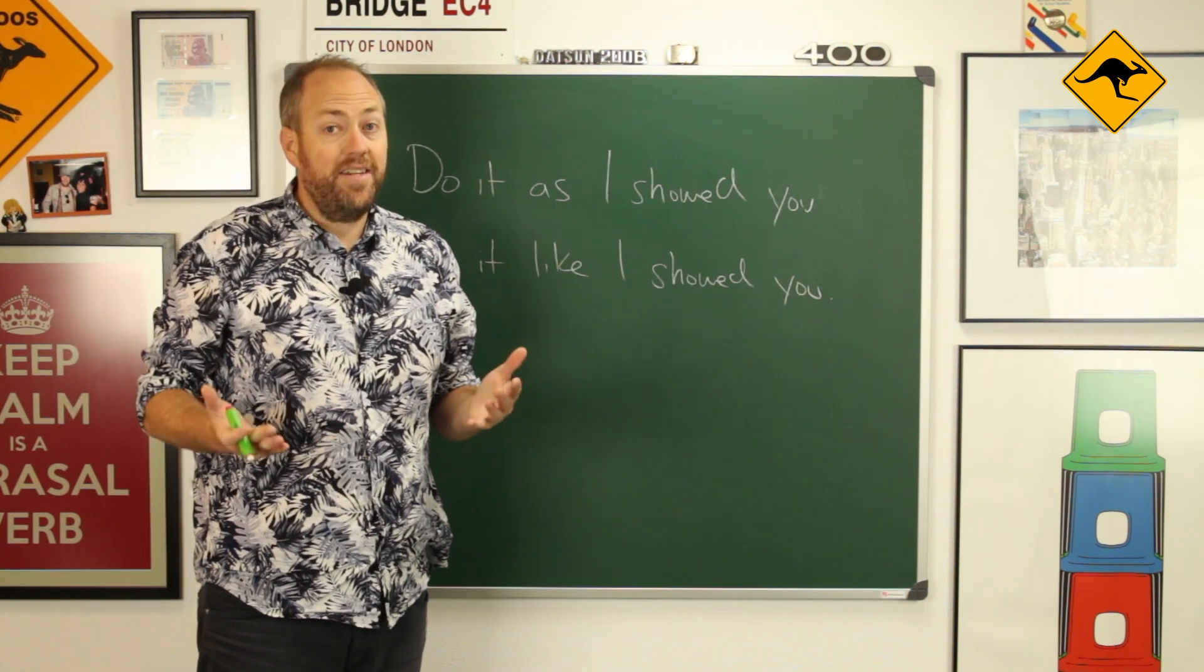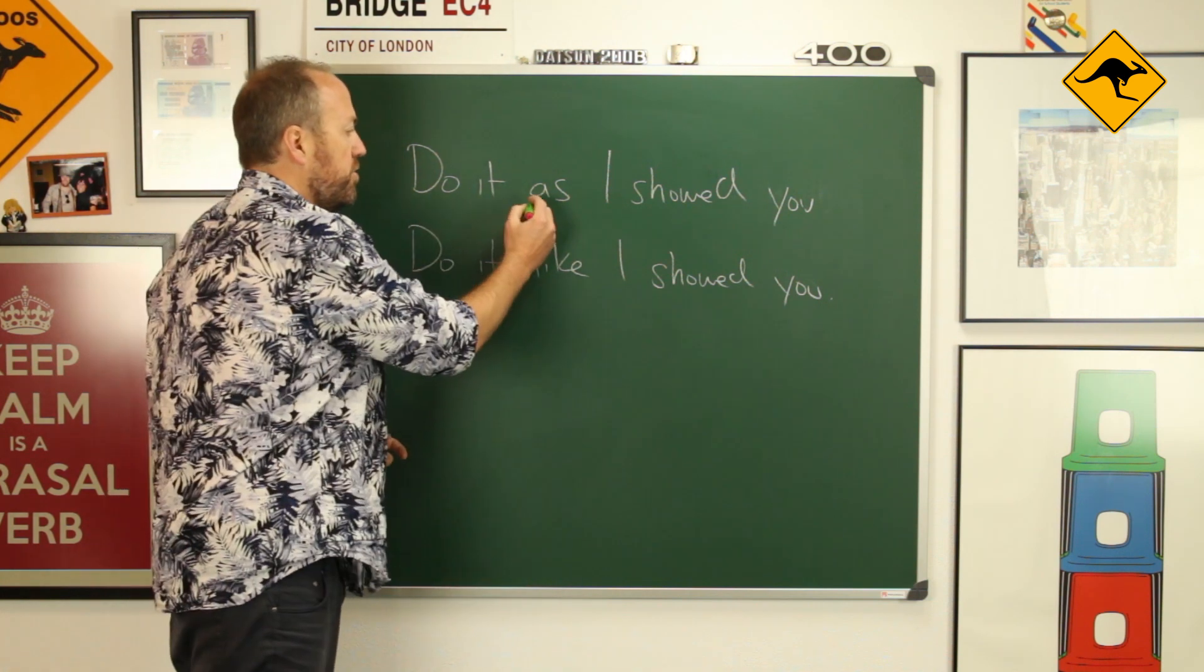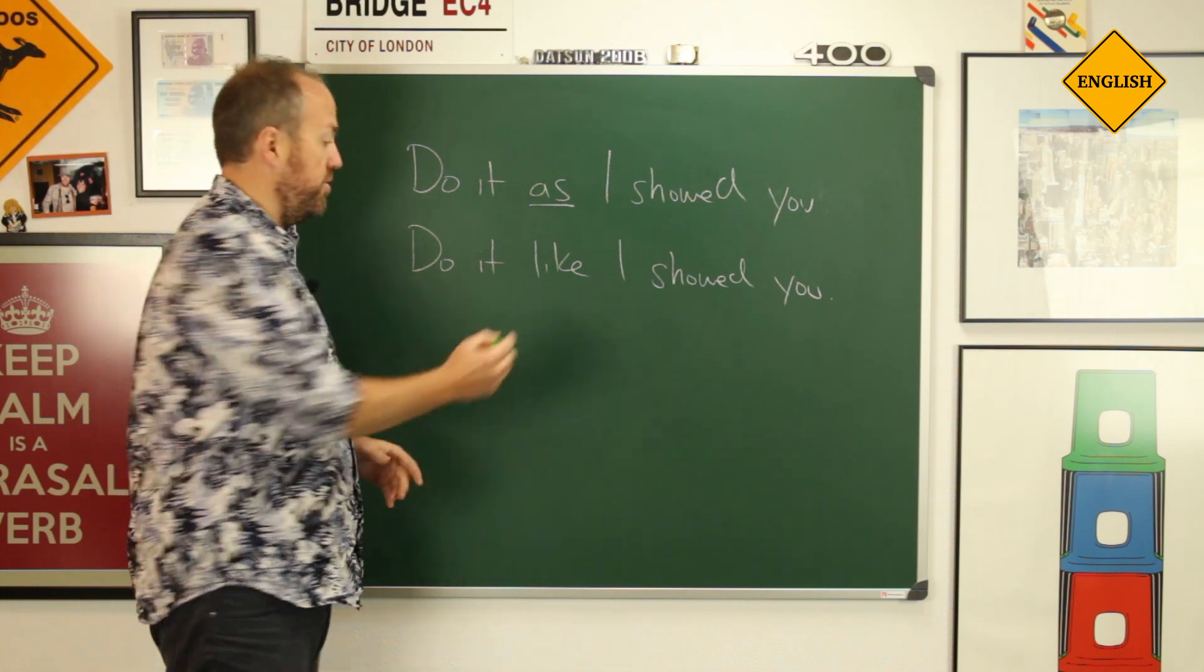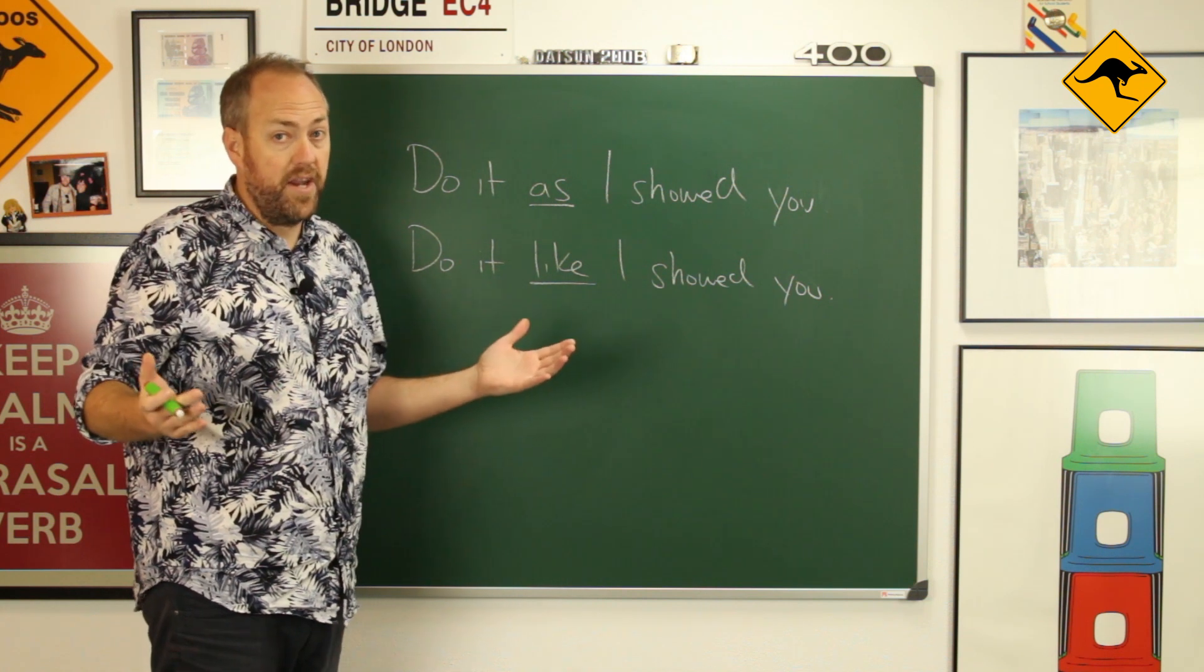Sometimes both like and as could be possible. So for example, do it as I showed you, this means in exactly the same way I showed you, or do it like I showed you. So this means in a similar way to I showed you. So in this case they're both correct.